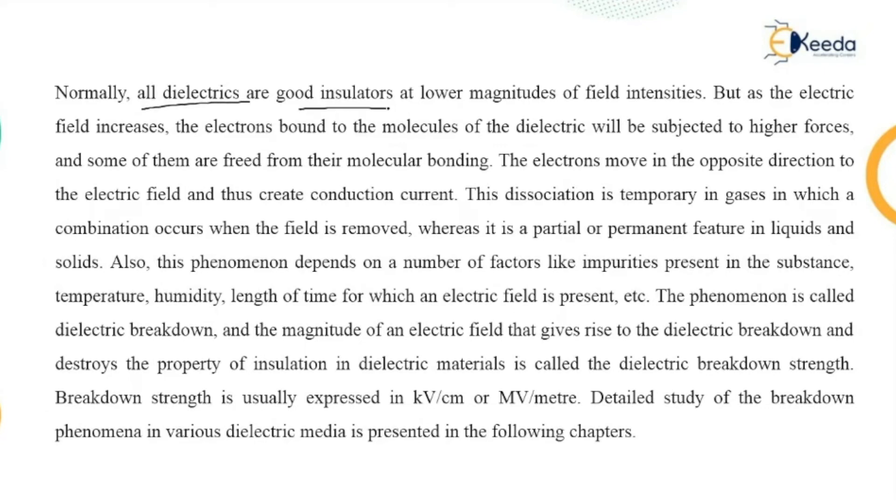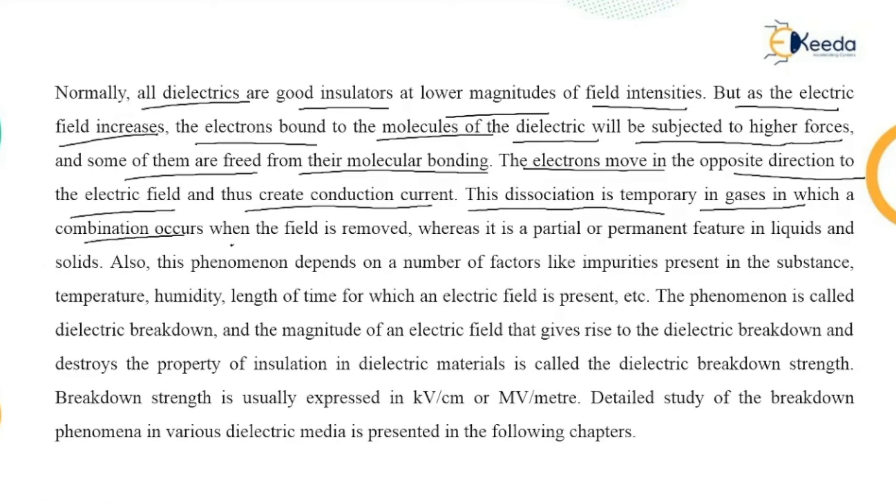Normally, all dielectrics are good insulators at lower magnitudes of field intensities. But as the electric field increases, the electrons bound to the molecules of the dielectric will be subjected to higher forces, and some of them are freed from their molecular bonding. The electrons move in the opposite direction to the electric field and thus create conduction current. This dissociation is temporary in gases, in which recombination occurs when the field is removed, whereas it is a partial or permanent feature in liquids and solids.